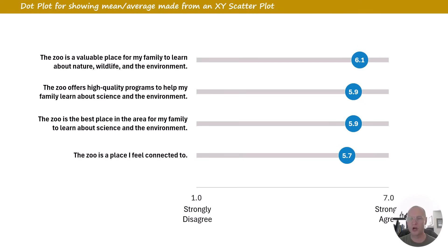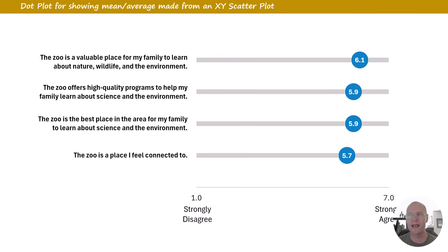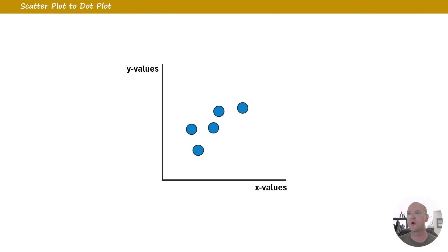Another chart I love to make is a dot plot. This is not a native chart type in PowerPoint and Excel, but it's really nice for showing mean scores, average ratings, or summary statistics. I'm not going to show you the full build here since we have dedicated videos on that, but essentially these are just scatter plots — we do have an XY scatter plot by default in PowerPoint and Excel.